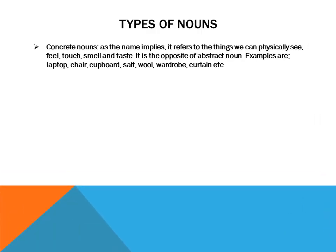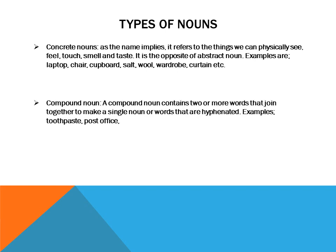Still on types of nouns, we have concrete nouns. As the name implies, concrete nouns refer to things we can physically see, feel, touch, smell, and taste. It is the opposite of abstract nouns. Examples include laptop, and so on.